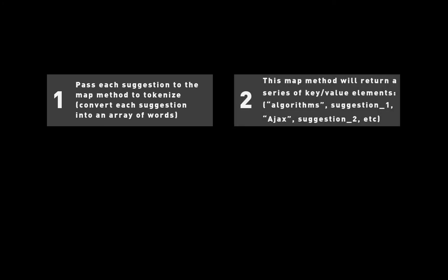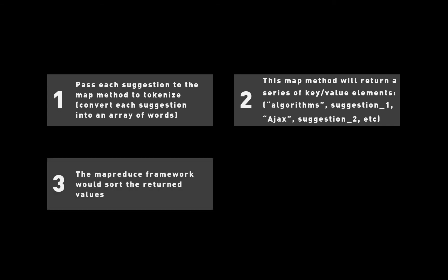In order to implement MapReduce, we're going to follow these steps. First, we're going to pass each suggestion to the MapReduce method to tokenize it — which means to convert each suggestion into an array of words. Next, we're going to use the Map method to return a series of key-value elements, for example: algorithms, suggestion one; AJAX, suggestion two; etc. Third, the MapReduce framework is going to sort out the return values so they're a little bit easier and more efficient to work with.